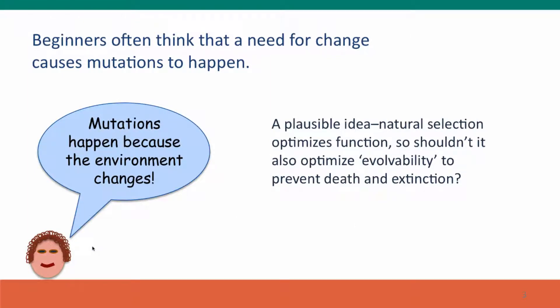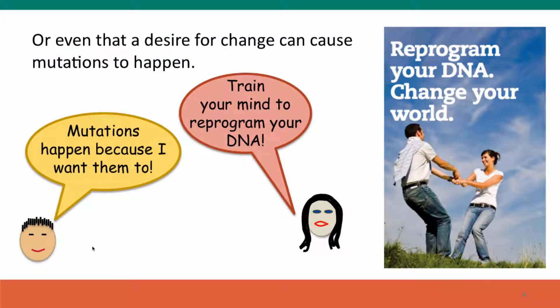Now, beginners often think that a need for change causes mutations to happen — that mutations happen because the environment changes. This makes sense intuitively. Natural selection optimizes function, so why didn't natural selection act on the ability to evolve, to prevent death and extinction? People often think that even a desire for change can cause mutations to happen.